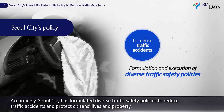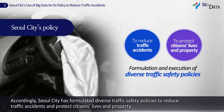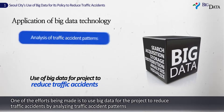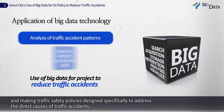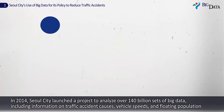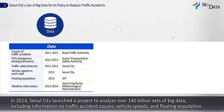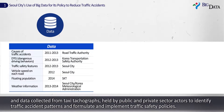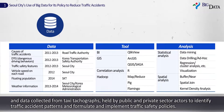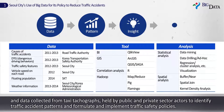Accordingly, Seoul City has formulated diverse traffic safety policies to reduce traffic accidents and protect citizens' lives and property. One of the efforts being made is to use big data for the project to reduce traffic accidents by analyzing traffic accident patterns. In 2014, Seoul City launched a project to analyze over 140 billion sets of big data, including information on traffic accident causes, vehicle speeds, and floating population, as well as data collected from taxi tachographs held by public and private sector actors.